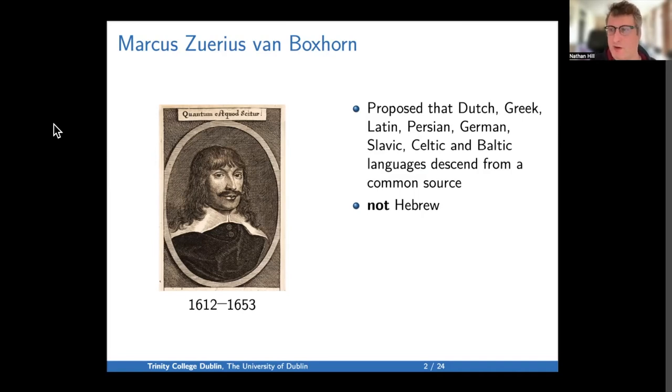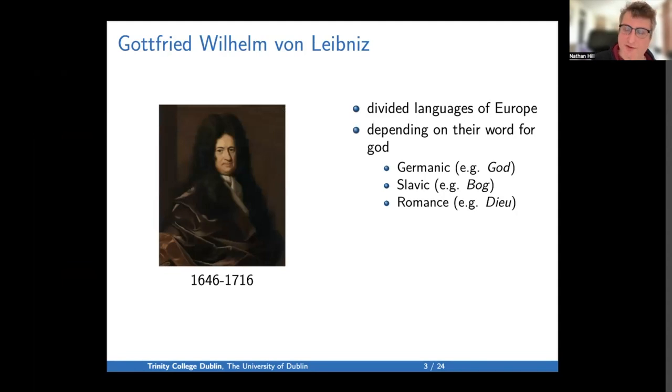So the next stop in our journey is Gottfried Wilhelm von Leibniz, 1646 to 1716. He's famous for many reasons, including being together with Newton one of the joint founders of calculus. So he divided the languages of Europe into three groups, depending on their word for God. You see Germanic has words for God that start with a G, Slavic words for God that start with a B, and Romance words for God that start with a D.